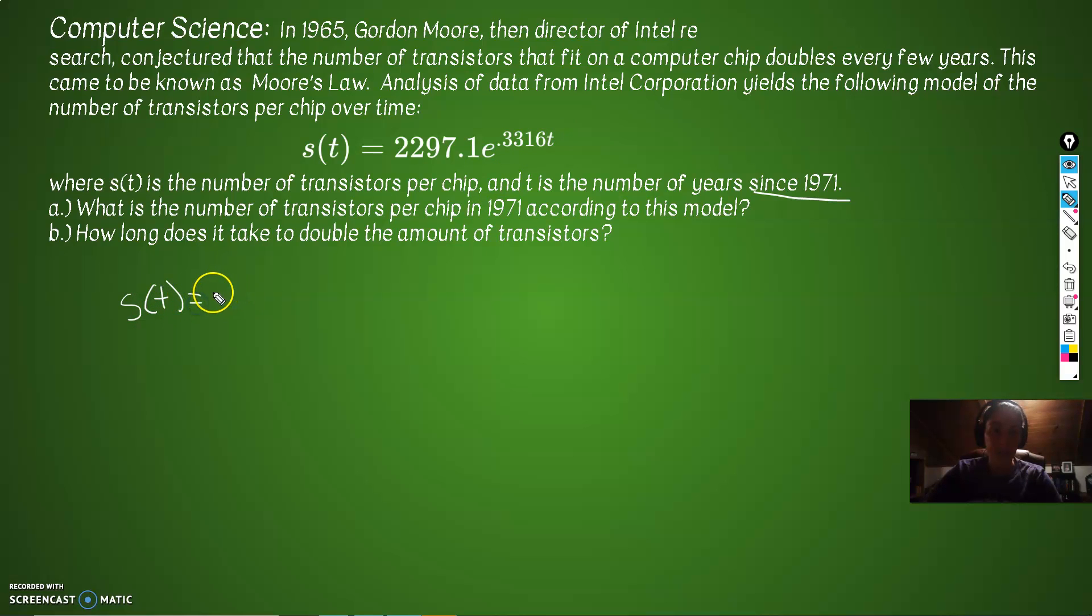What is the number of transistors per chip in 1971 according to this model? So if T is years since 1971, if we want to figure out what happened in 1971, then T would be 0. So S sub T equals 2297.1 times E to the 0.3316 times 0, because 0 years. Anything times 0 is 0. E to the 0 is 1. So the amount of transistors in 1971 would be 2297.1. Why does this make sense? Because again, A equals P to the E to the R to the T, where P is the initial amount. The initial amount was the transistors in the starting year. So that's why this came out so easily. It's all about P times E to the RT. Works every time.